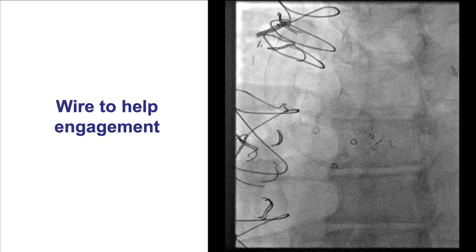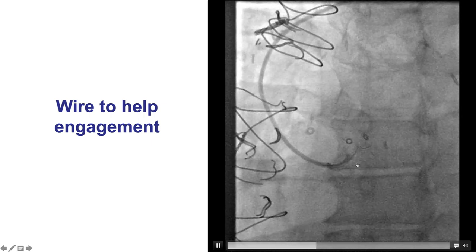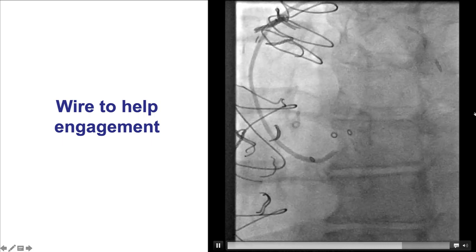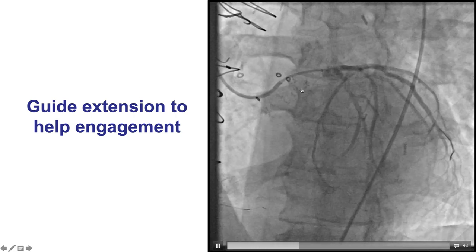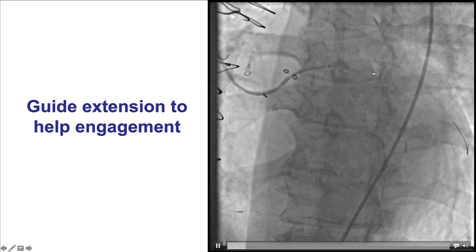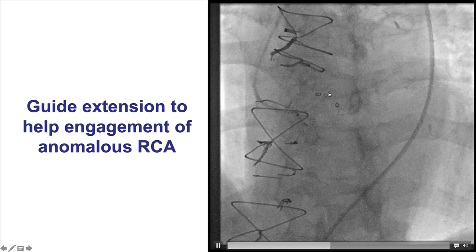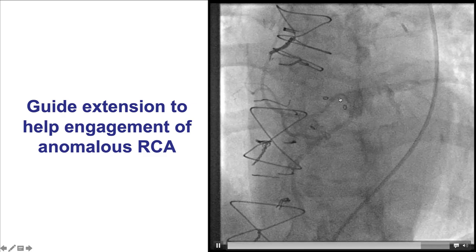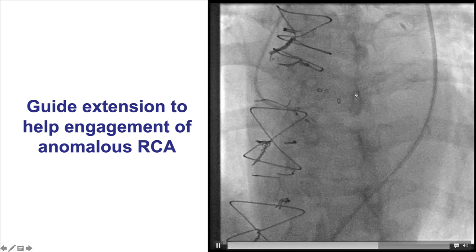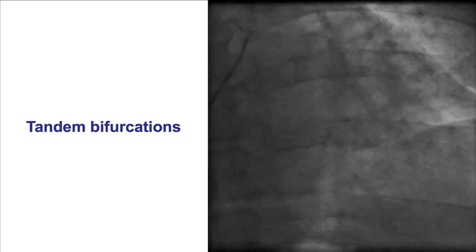A second potential use is to facilitate coronary engagement. This is an example of a patient in whom engagement of the left main was extremely challenging. Eventually a guide wire could be advanced into the vessel, and then over this wire a guide extension was advanced deeply into the left main, which facilitated engagement and performance of angiography as well as PCI. This is another example in which there is an anomalous right coronary artery using a guide extension, which was critical for engaging that vessel coming from the left coronary cusp. So for challenging engagement, a guide extension can quite often provide a solution.